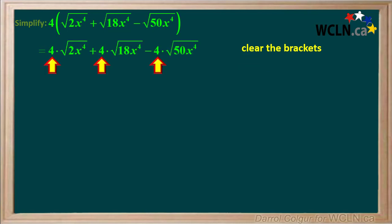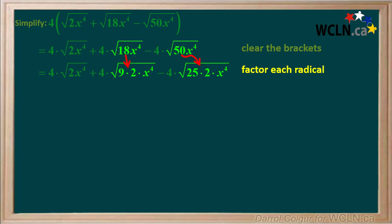We remove the brackets and multiply each term by 4. Next, we factor any radicals that can be factored. 18x to the 4th can be factored to 9 times 2 times x to the 4th, and 50x to the 4th can be factored to 25 times 2 times x to the 4th.